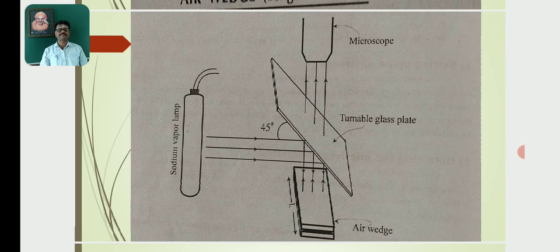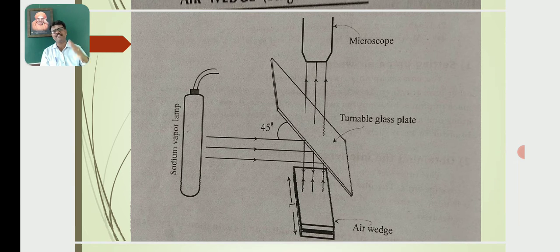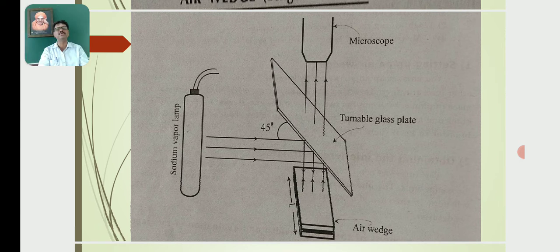The experimental arrangement consists of a sodium vapour lamp. The monochromatic light from the sodium vapour lamp is made to incident on a turnable glass plate, which is inclined at an angle of 45 degrees. The parallel beam of light incident on the glass plate gets reflected and moves vertically downwards, and is made to incident on the upper glass plate of the air wedge.